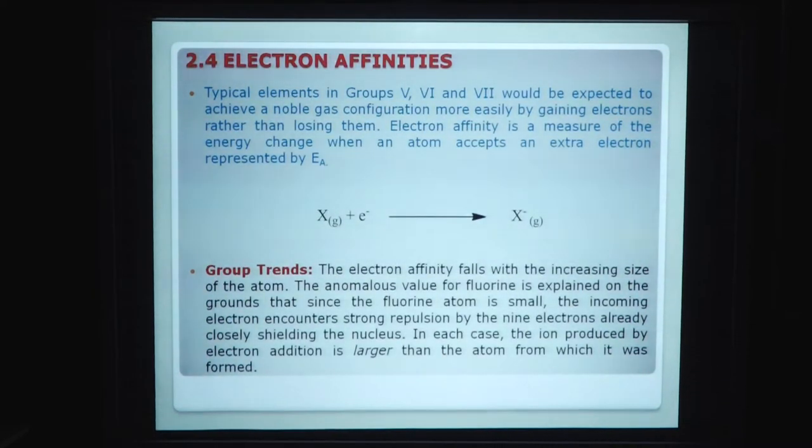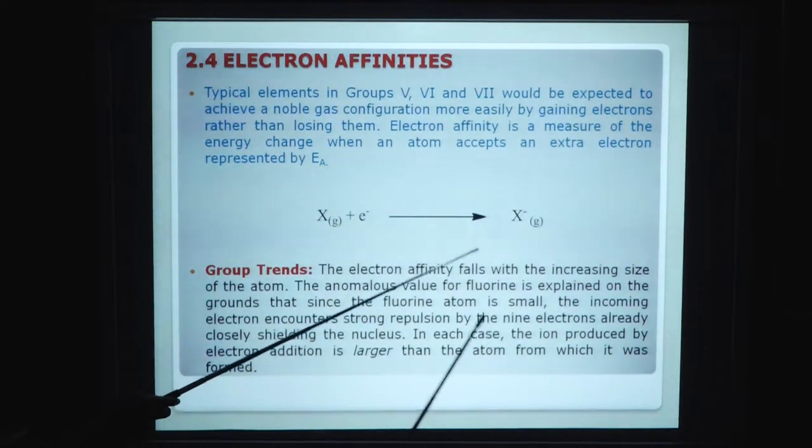Electron affinity. Typical elements group 5, 6, 7 would be expected to achieve a noble gas configuration more easily by gaining electrons rather than losing them. Electron affinity is a measure of energy change when an atom accepts an extra electron represented by Ea. When element gains electron, it becomes ionized.